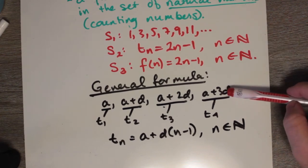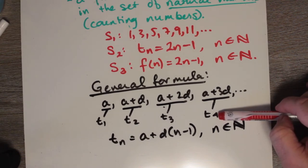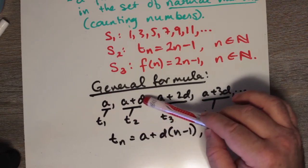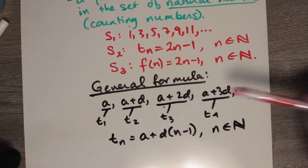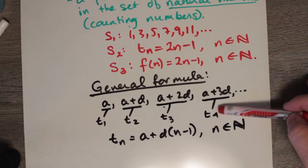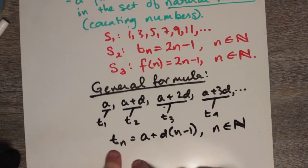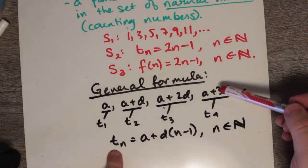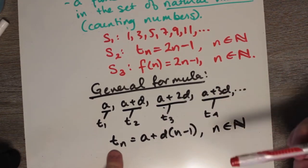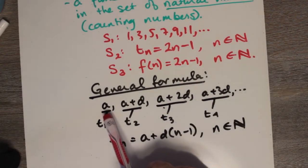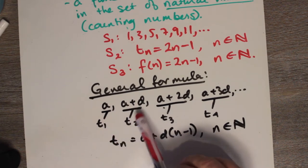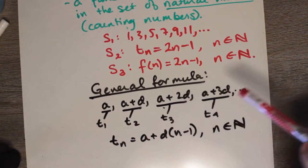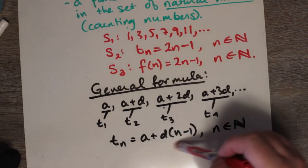Notice that the coefficient in front of D is always 1 less than the subscript on T. We have T1, T2, T3, T4, and N is always 1 less than whatever the subscript happens to be. To get the Nth term, we multiply D by N minus 1 times. We don't add D at all to the first term; once to the second, twice to the third, and three times to the fourth.